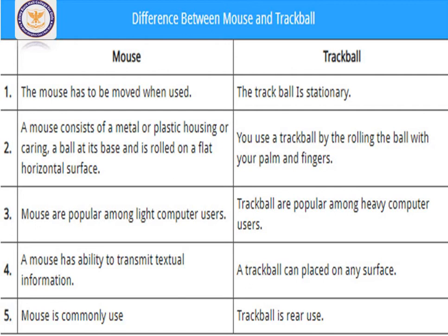To make concepts clearer, let's talk about the differences between a mouse and a trackball. A mouse has to be moved — on a mouse pad, on a table, on a glossy surface — you have to move it. On the contrary, a trackball is stationary and static. You do not need to move the trackball; only the ball attached on top needs to be moved to control the cursor on the screen.